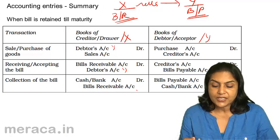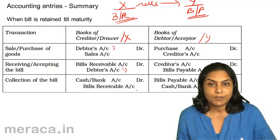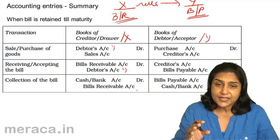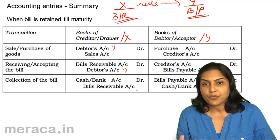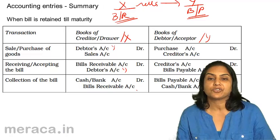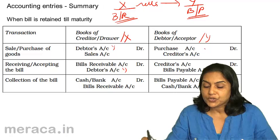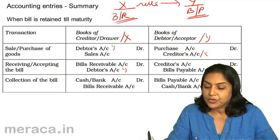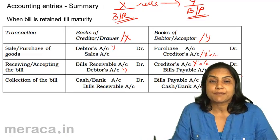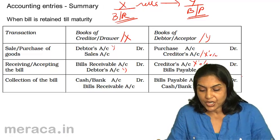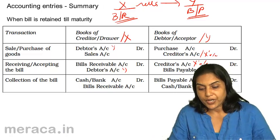So in X's books: Y's account debit to sales; bills receivable account debit to Y; and when money is collected against the bill, cash account debit to bills receivable. For the same transactions in the books of Y: it was a sale in X's books but a purchase in Y's books. Purchase account debit to X's account. Then X's account debit to bills payable because he accepts a bill of exchange. When the bill is honoured, the entry becomes bills payable account debit to cash.